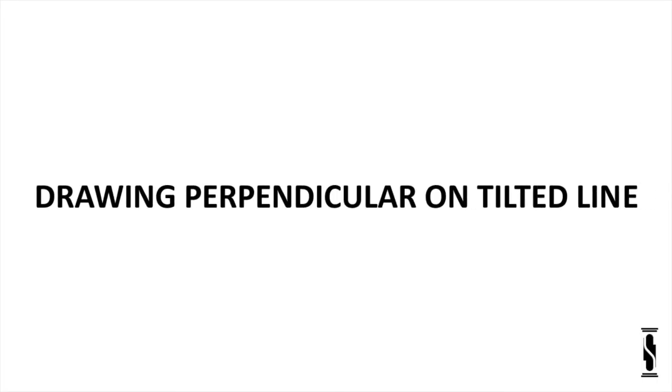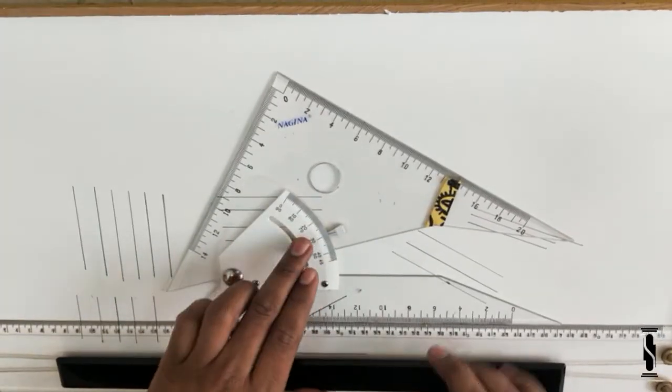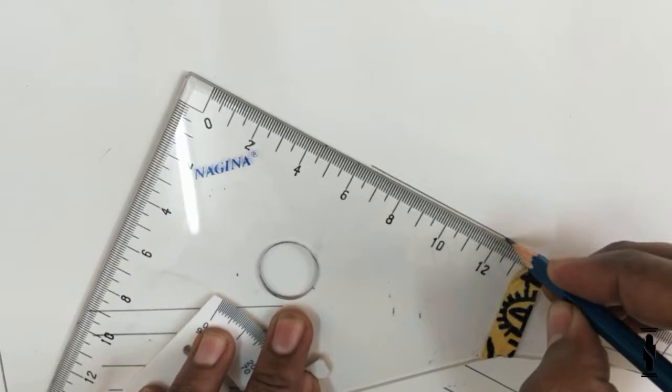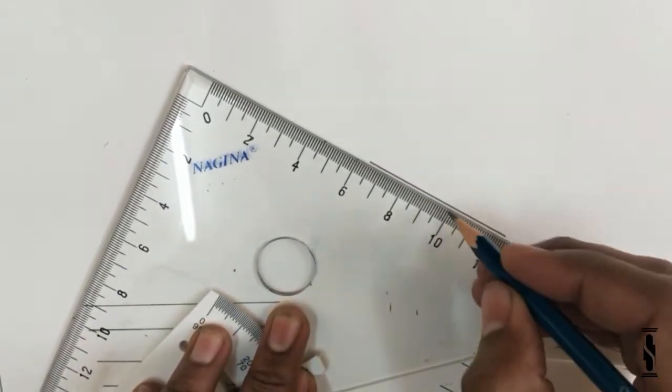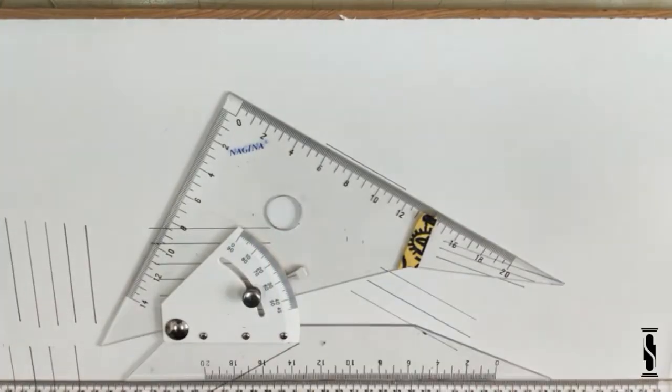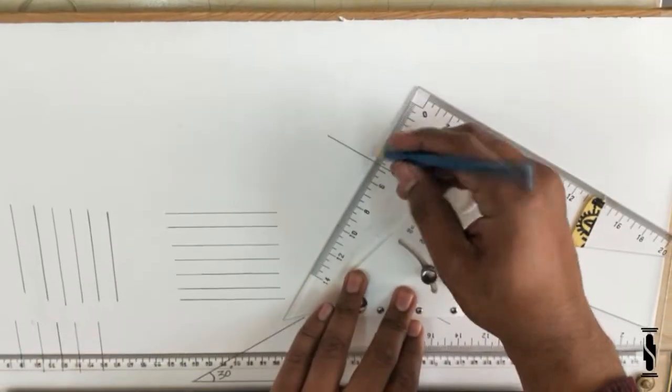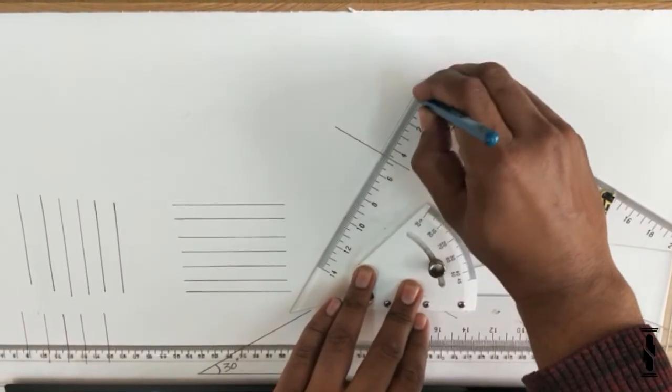Now, it's time to draw perpendiculars on a tilted line with the help of set square. Draw a line on any desired angle, say 30 degrees. And slide the set square and draw the perpendicular on it with the perpendicular edge of the set square.